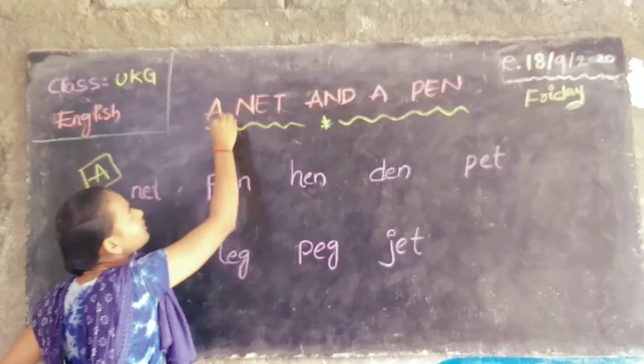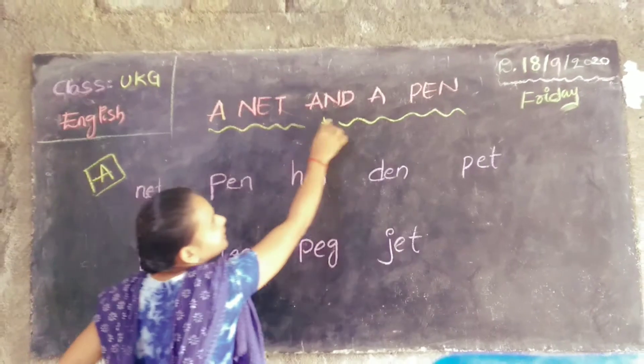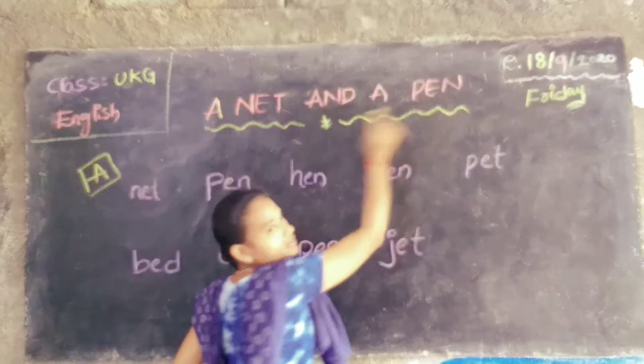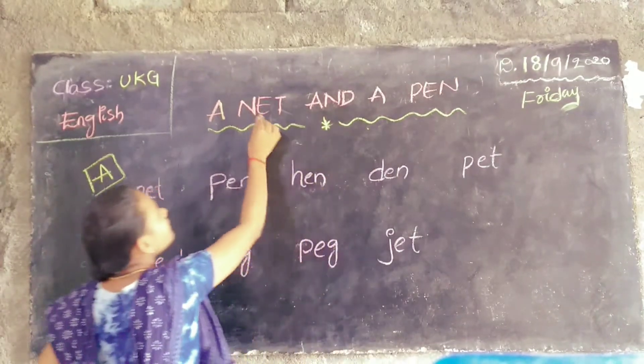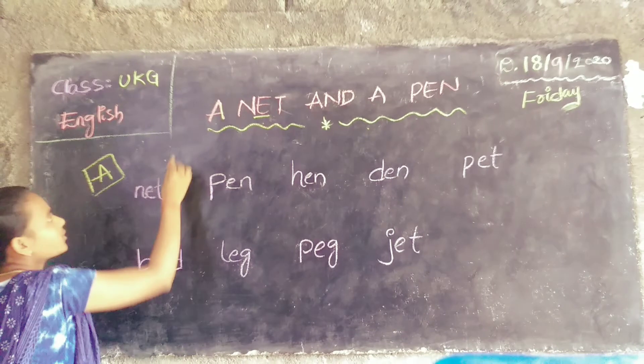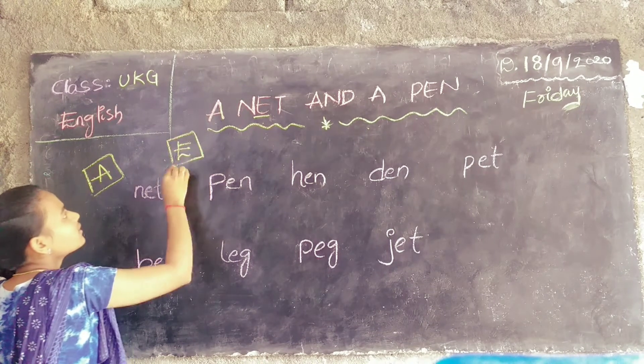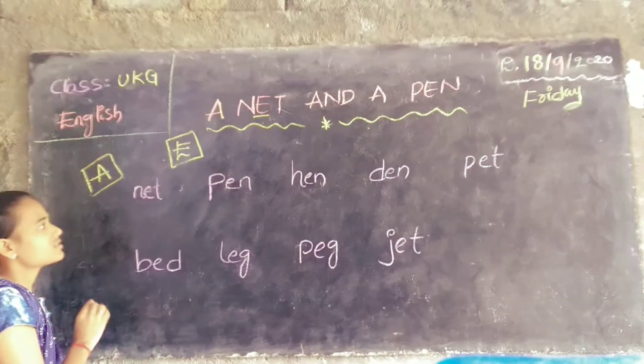Okay, here — a net and a pen. See here, E. Today the topic is the sound of E in words.